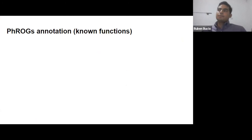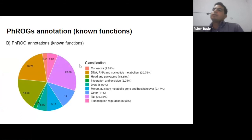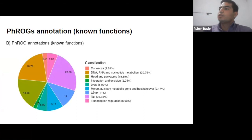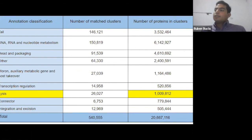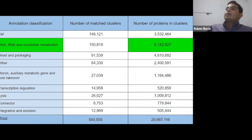We assigned functions to our clusters using the PHROG database. Most of the database — about half — belongs to structural proteins such as head and packaging and tail structural proteins, but we also have many proteins involved in DNA metabolism. If you're interested in proteins responsible for cell lysis, we have more than one million proteins tagged with this function. If you're interested in the viral genome replication machinery, we have more than six million proteins with that function — we are a goldmine for your study.